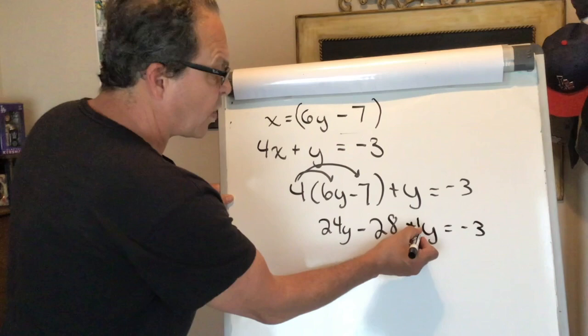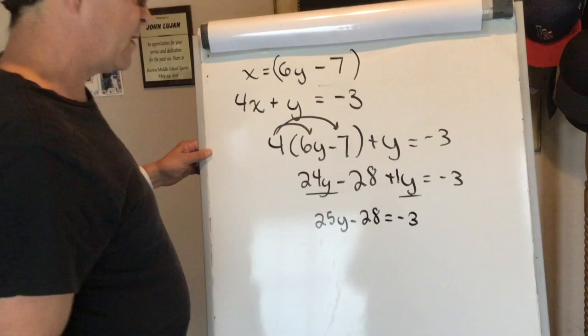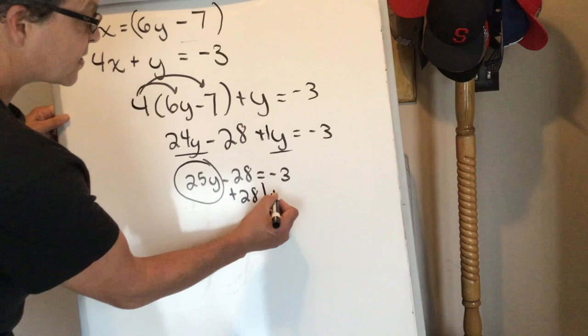So I'm going to combine my like terms: 25y minus 28 is equal to negative 3. Now to solve for y, I first have to get rid of a negative 28 by adding 28 to both sides of the equation.